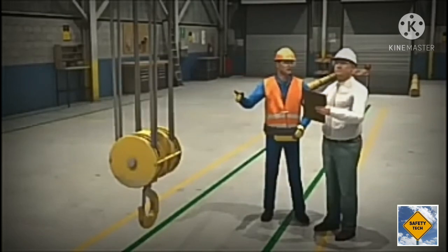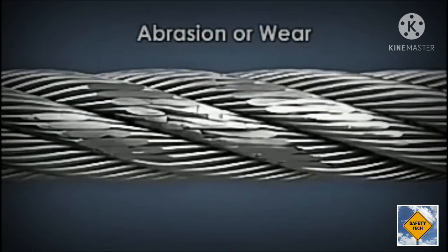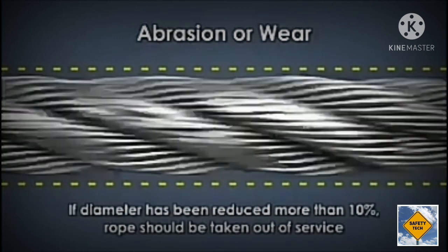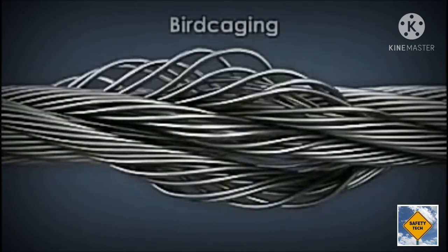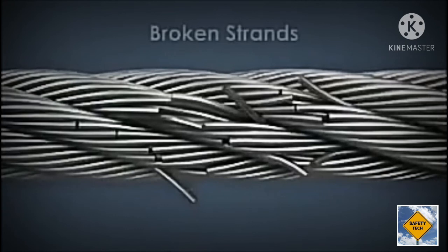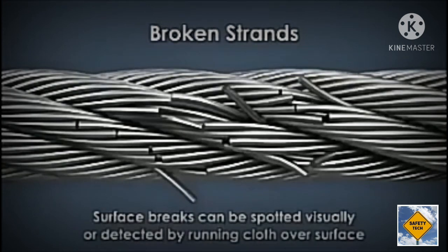There are many conditions that can cause a wire rope to become dangerous. Immediately notify your supervisor if you see abrasion or wear. This can occur during the normal life of the rope. If the diameter of the rope has been reduced by more than ten percent, the rope should be taken out of service. Birdcaging is when the rope strands have become separated, creating a birdcage effect. Birdcaging is caused by sudden release of tension and greatly weakens a rope. Broken strands can occur within the rope or on the surface. The internal breaks are harder to find but they are very dangerous. Surface breaks can be spotted visually or detected by running a cloth over the surface to find snags.